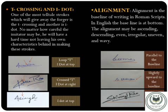Third is alignment — the baseline of writing in Roman scripts. In English, the baseline is at the bottom. The alignment may be ascending (upward to the line), descending (downward to the line), even, irregular, uneven, or wavy. The first picture shows writing parallel to the baseline, analyzed by drawing a line under the signature. The second shows slightly upward movement, and the third is totally upward from the baseline.